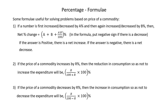Here are a few formulae useful for solving problems based on price of a commodity. If a number is first increased or decreased by 'a' percent and then again increased or decreased by 'b' percent, then net percent change is equal to a + b + (ab/100) percent. In the formula, put a negative sign if there is a decrease.